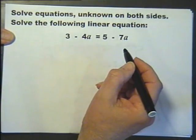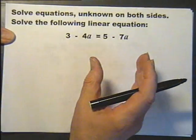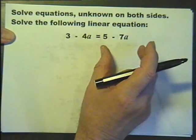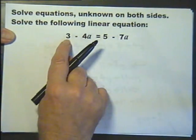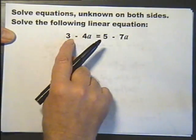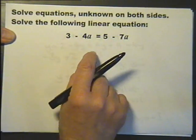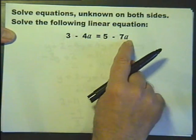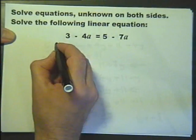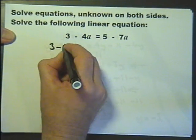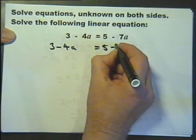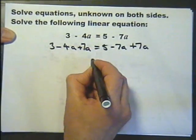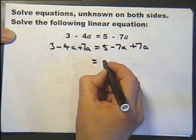So let's think ahead about this one. I want to get either all of the a information on the left or all of the a information on the right. So I could add 4a to both sides. What would be the result? I'd be left with 3 over here and I'd be left with minus 3a over there. However, if I consider adding 7a to both sides, I think this approach is better.